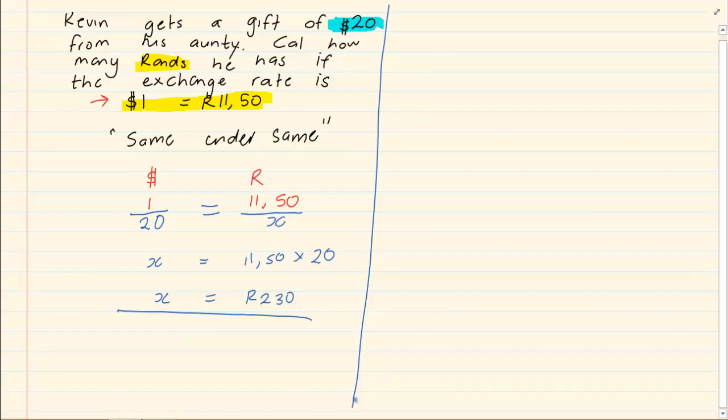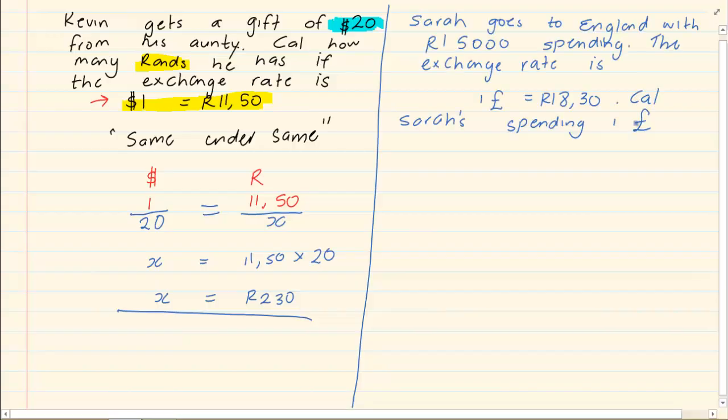Let us do another example. Sarah goes to England with fifteen thousand rand. The exchange rate is one pound is eighteen rand thirty. Calculate Sarah's spending in pounds.